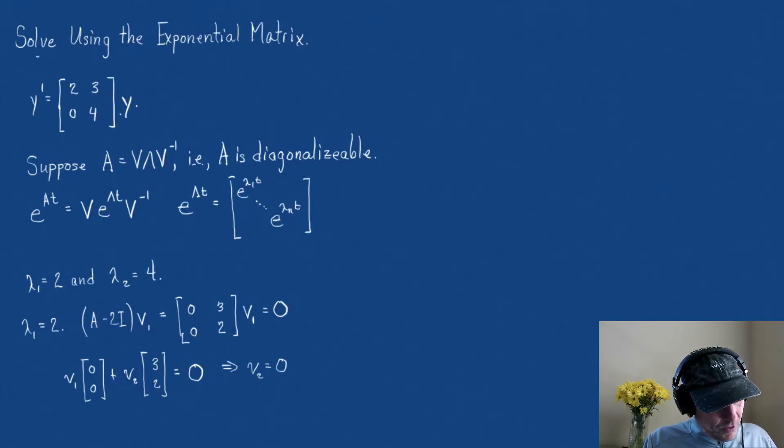So, what we would do is, so then, so let's, and then we're going to use V1 as 1. So, my first eigenvector, V1, is 1, 0. Okay?